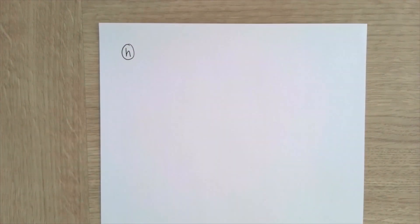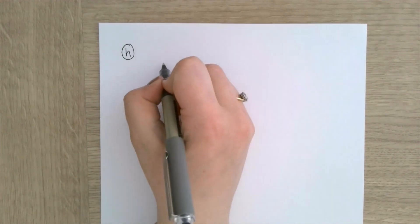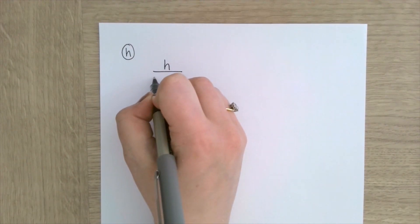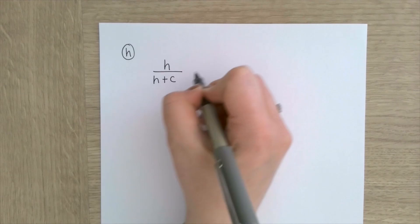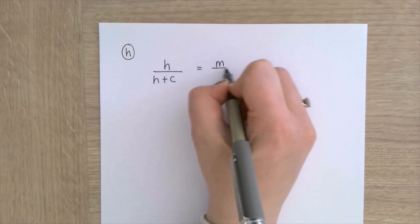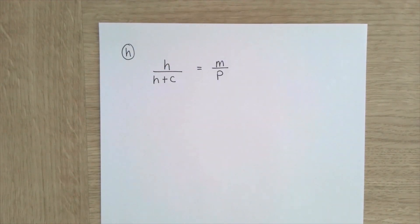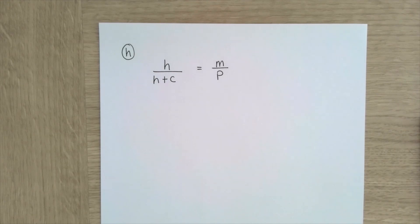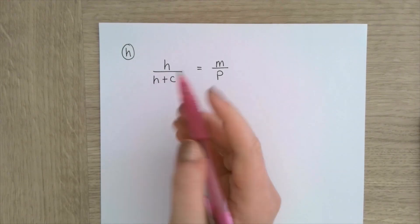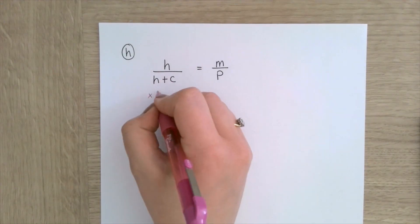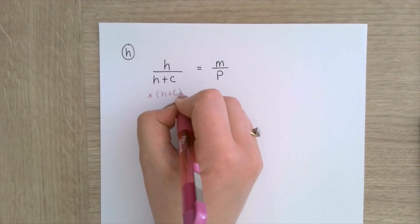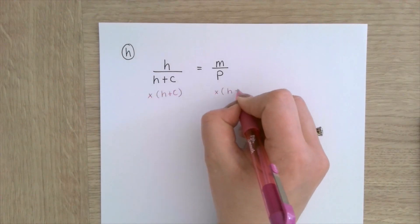H is what I want to make the subject this time, for the formula h over h plus c equals m over p. The first thing I'm going to do is multiply both sides by this denominator, so I'm going to multiply by h plus c on both sides.